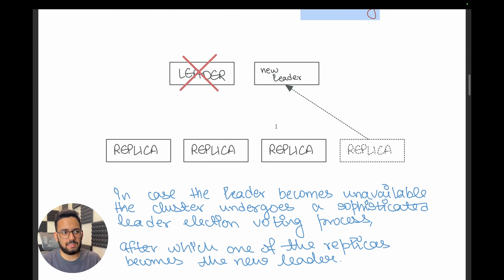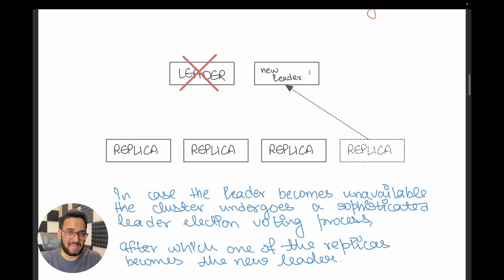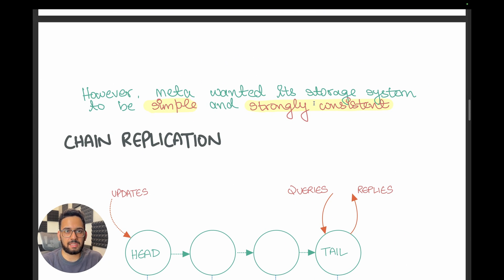Additionally, if the leader node goes down, one of the replicas must be promoted to become the new leader using a sophisticated leader election algorithm. In leader election, there's a complex voting process to ensure the node with the latest updates gets promoted. This process can be hard to monitor, hard to predict in terms of which node becomes leader, and is generally complicated. Meta had two strong requirements: it wanted the system to be simple — which is not the case with a difficult leader election algorithm — and it wanted the data store to be strongly consistent.